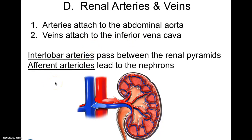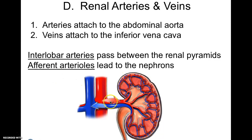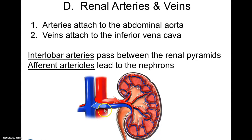You have interlobar arteries that pass between the renal pyramids — those are the arteries in between your pyramids. Your afferent arterioles lead to the nephrons, going from artery to arterioles. Your efferent venules come from the nephrons back out.